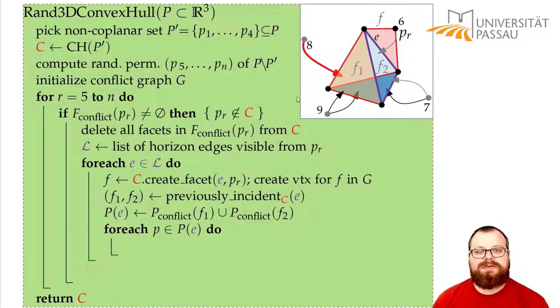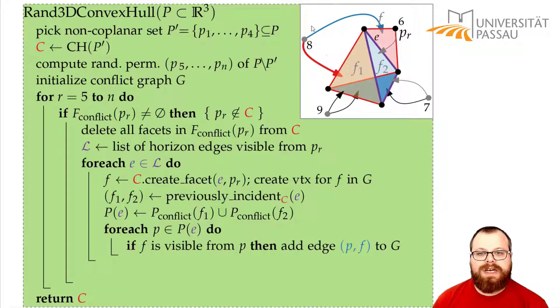Now for each point in this conflict graph, for example number 8, which has a conflict with face F1, we have to check, does it see the face F? If it does, then we have to add a conflict. So we add an edge here from point 8 to the new face.